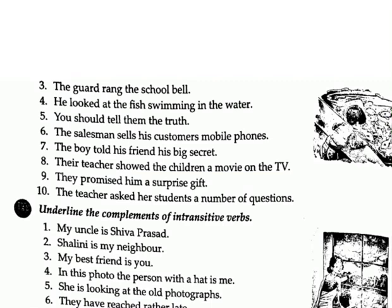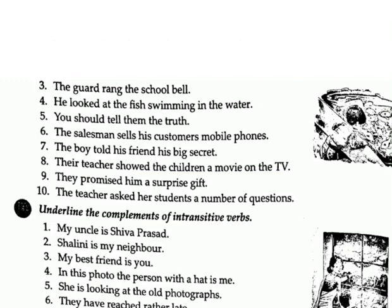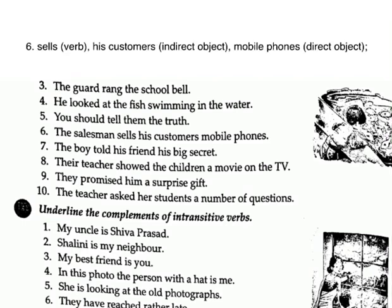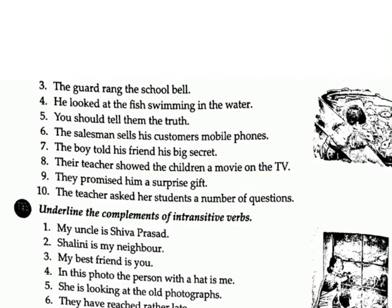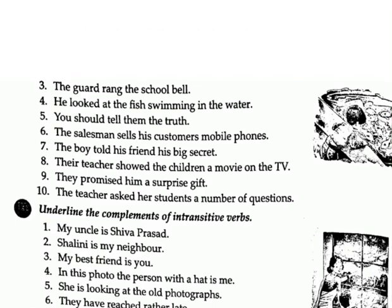5. You should tell them the truth. Answer: should tell — verb; them — indirect object; the truth — direct object. 6. The salesman sells his customers mobile phones. Answer: sells — verb; his customers — indirect object; mobile phones — direct object. 7. The boy told his friend his big secret. Answer: told — verb; his friend — indirect object; his big secret — direct object.